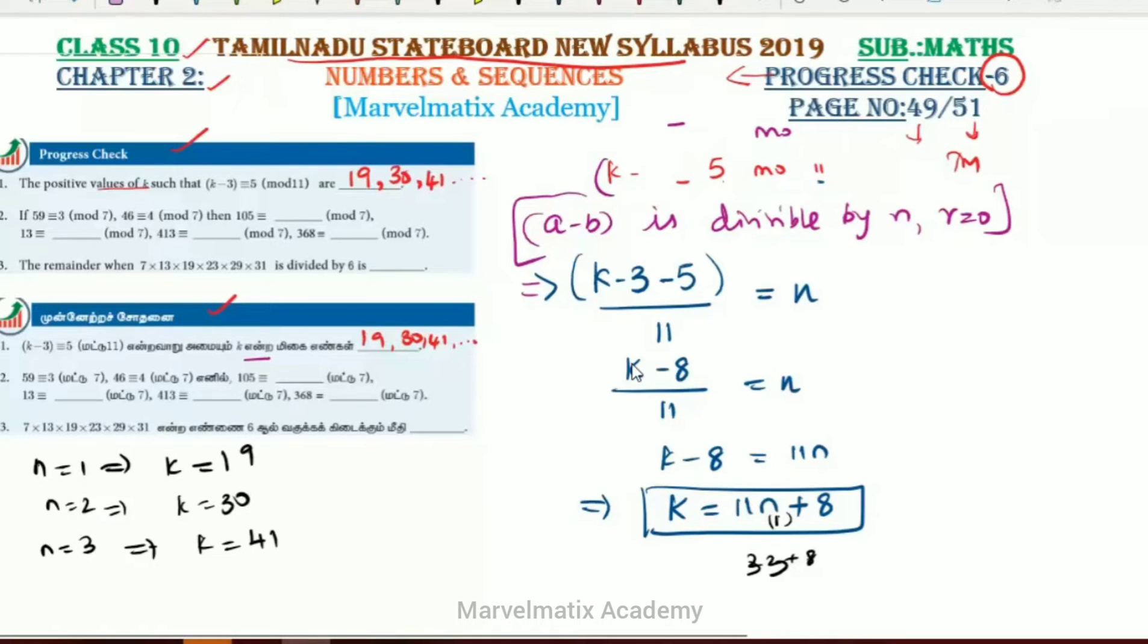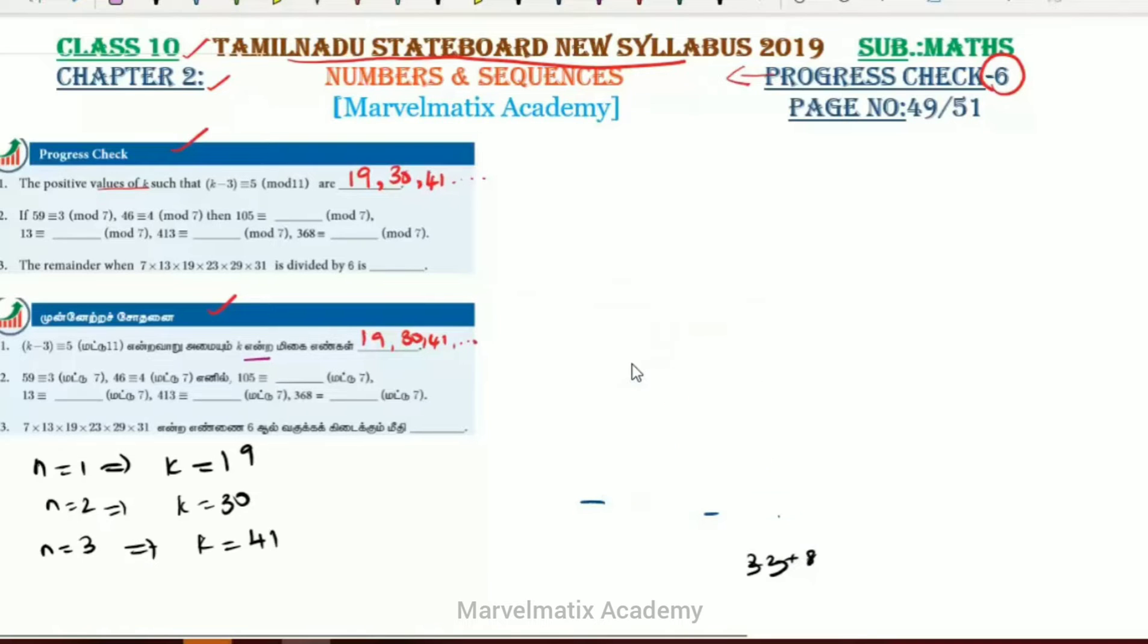Next question. The second question states 59 congruent to 23 mod 7.